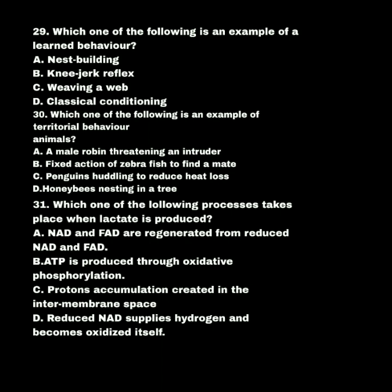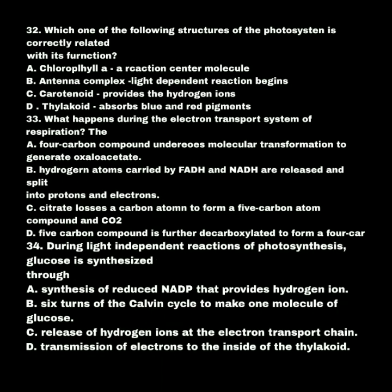Which one of the following structures of the photosystem is correctly related with its function? A. Chlorophyll a is a reaction center molecule. B. Antenna complex is where light-dependent reaction begins. C. Carotenoids provide the hydrogen ions. D. Thylakoids absorb blue and red pigments. The answer is A: chlorophyll a is a reaction center molecule.